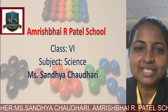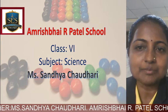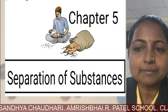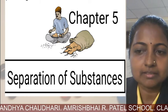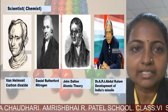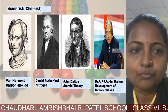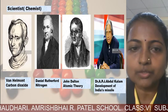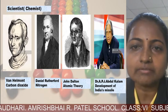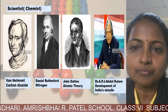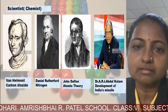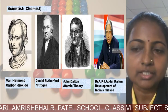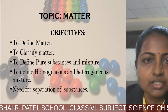Hello children, let's begin with science. Today we are going to see Chapter 5: Separation of Substances. I would like to show you some scientists who were chemists: Van Helmont who discovered carbon dioxide, Daniel Rutherford who discovered nitrogen, John Dalton who discovered atomic theory, and Dr. APJ Abdul Kalam who played a very important role in the development of India's missiles.